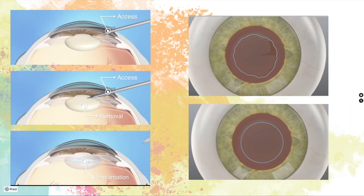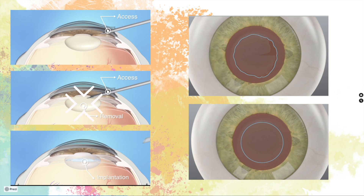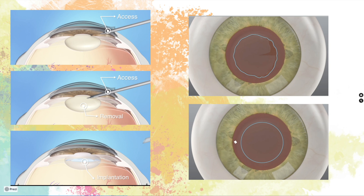Cataract surgery can be performed in three main steps. First, we make an incision into the eye to obtain access to the lens. Then we remove the cataract, and finally we insert a lens implant into the eye. Cataract surgery can also be performed assisted with a femtosecond laser, which creates a perfectly round, precision opening into the eye and softens the cataract.